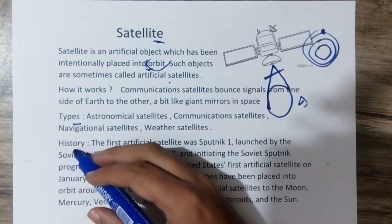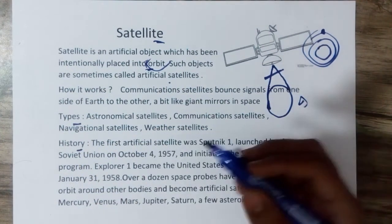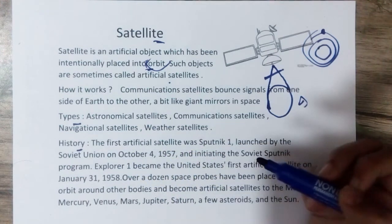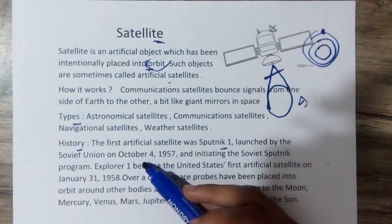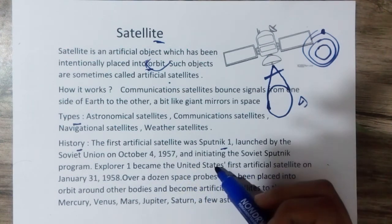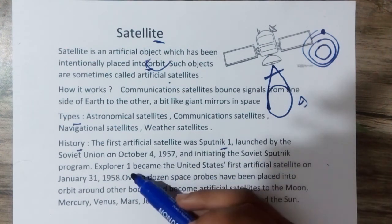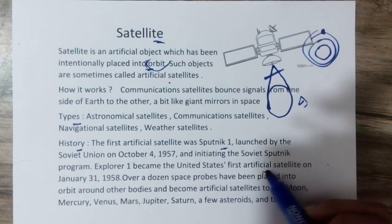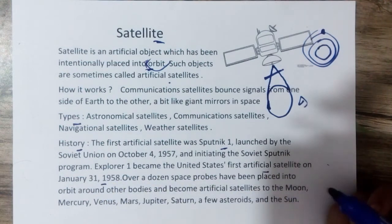History of the satellite. The first artificial satellite was Sputnik 1, launched by the Soviet Union on October 4, 1957. Following the initiation of the Soviet Sputnik program, Explorer 1 became the first United States artificial satellite on January 31, 1958.